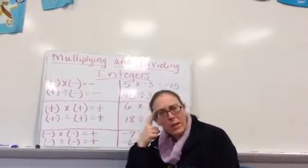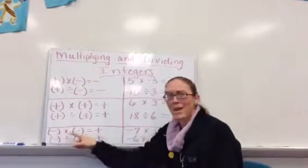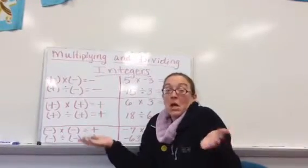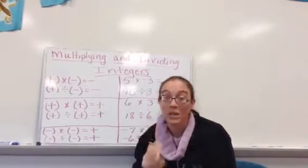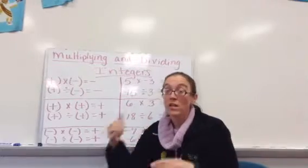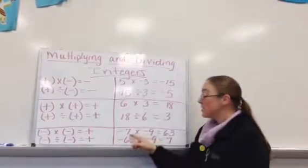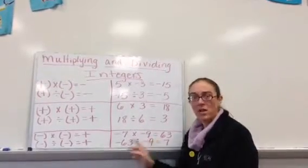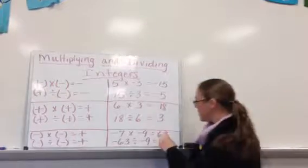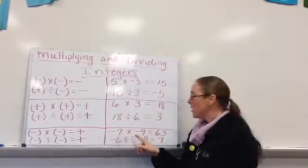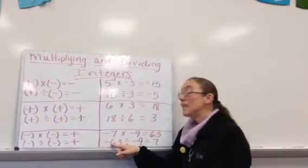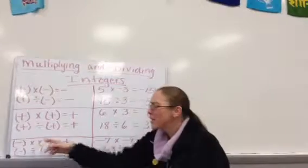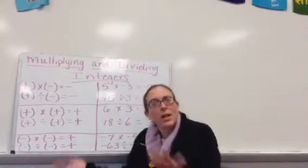Now the tricky one — I have to remember that two negative numbers multiplied or divided become positive numbers. Two negatives multiplied together or two negatives divided together give you a positive. Negative 7 times negative 9 is positive 63. Two negative numbers multiplied together give a positive number. And negative 63 divided by negative 9 is positive 7. Two negative numbers when multiplied or divided give you a positive number.